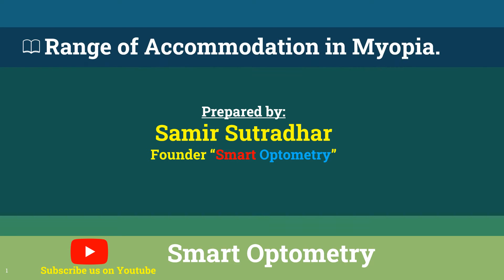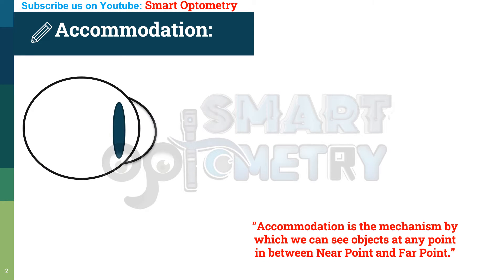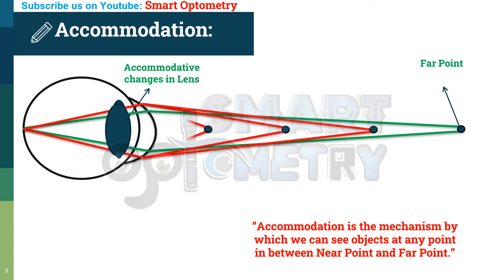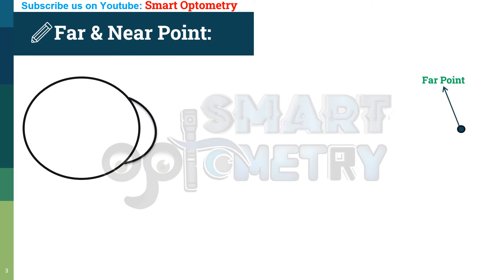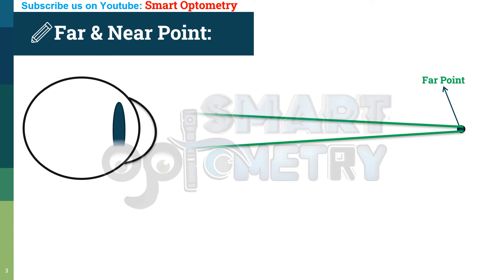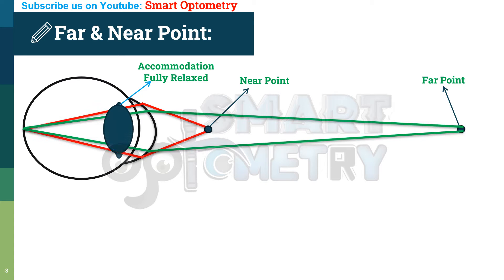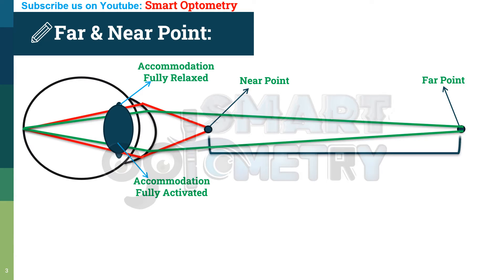Today I will discuss the range of accommodation in myopia. Accommodation is the mechanism by which we can see objects at any point between the near point and far point. The far point of accommodation is where we can see an object clearly with accommodation fully relaxed, and the near point is the closest point where we can see clearly with accommodation fully activated. The distance between near point and far point is called the range of accommodation.